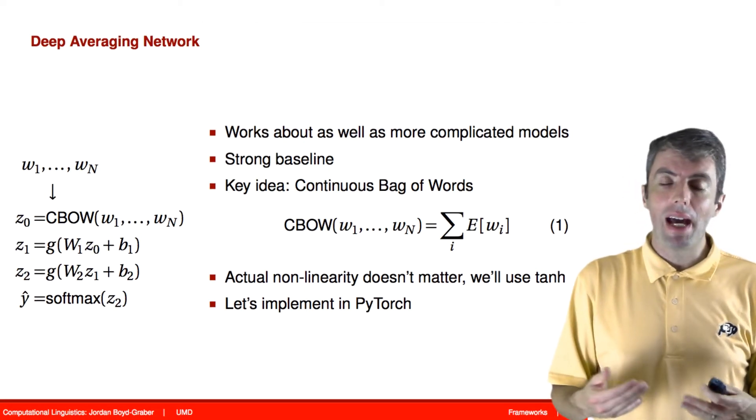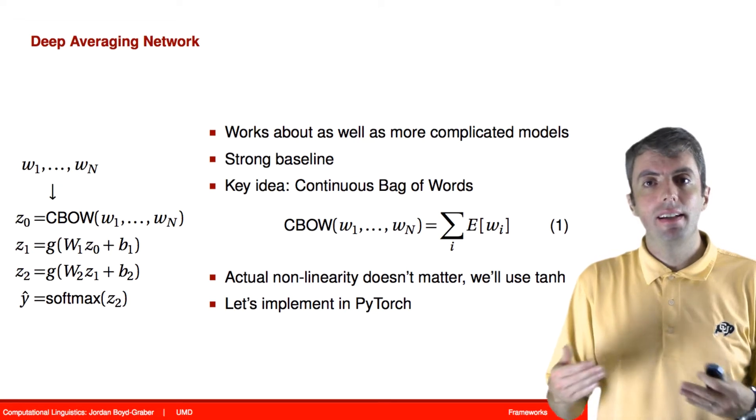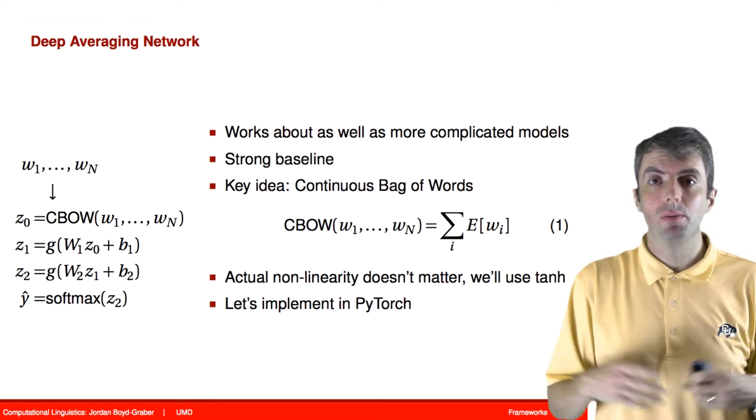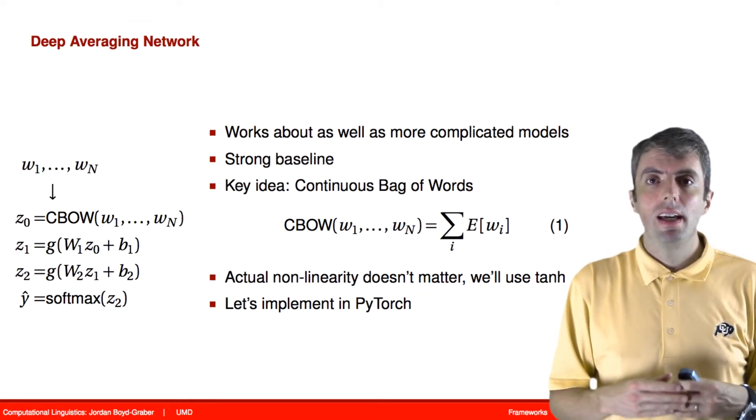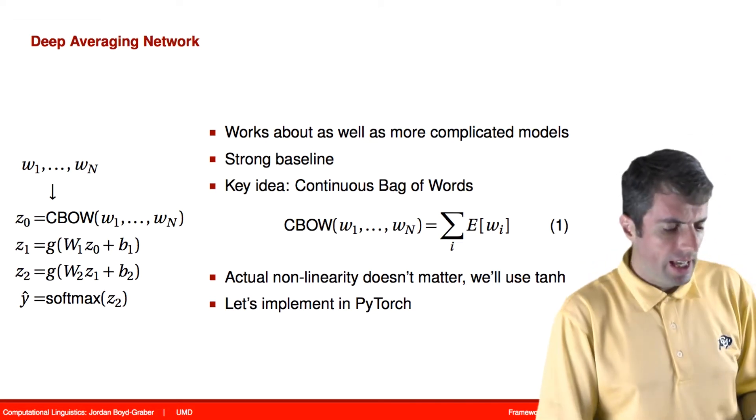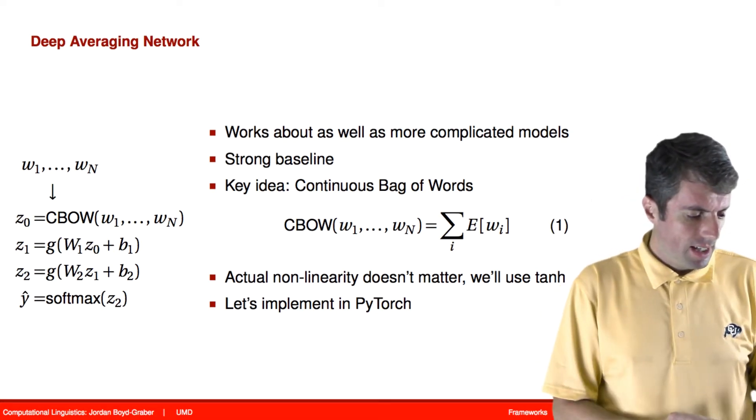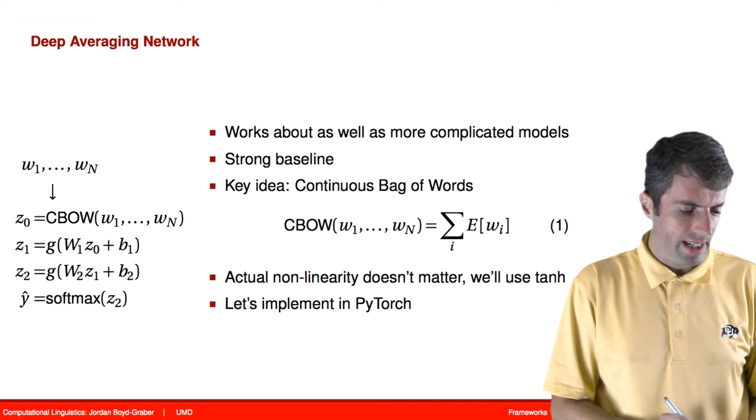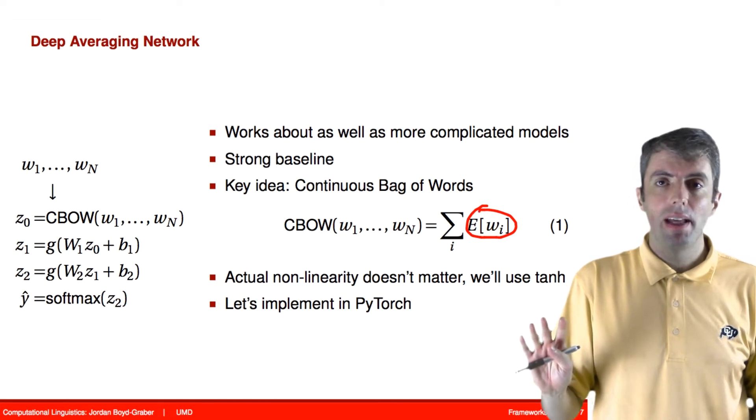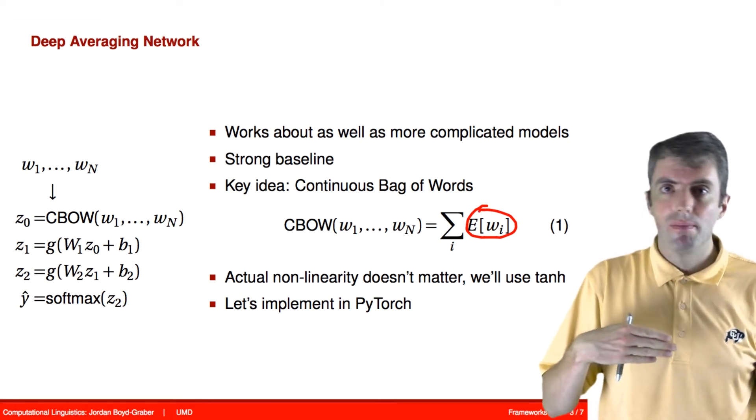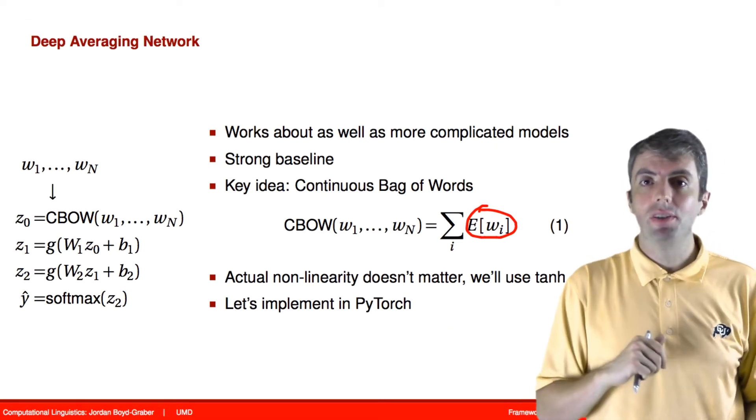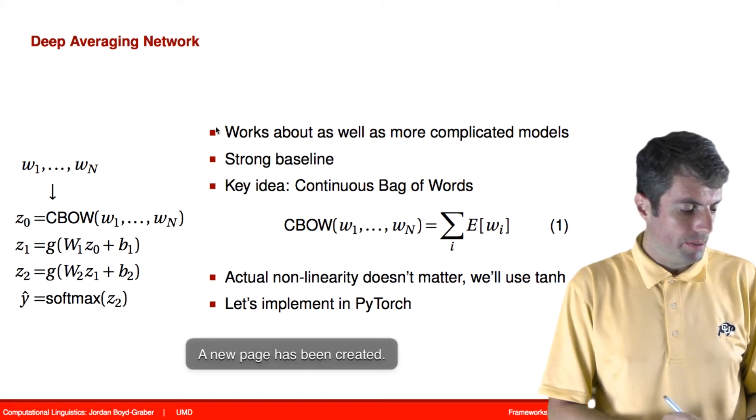This model is called a deep averaging network, and it is a classifier. It takes a bunch of words—a document, a sentence, what have you—as input, and outputs one of k classes. In between, it represents the words as a continuous bag of words. This means each of the words is represented by an embedding. We're not going to do anything fancy with those embeddings. Each embedding is an n-dimensional vector, say a 300-dimensional vector. We're just going to add them all together, and this now becomes the representation of the document.